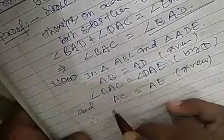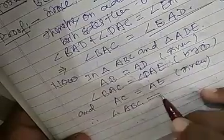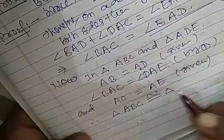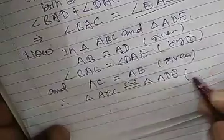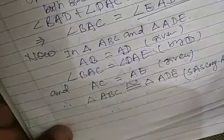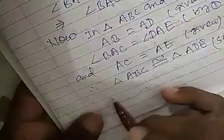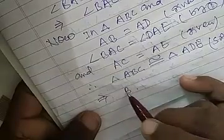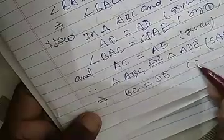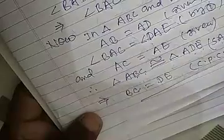Therefore, triangle ABC is congruent to triangle ADE by SAS congruence axiom. This implies that BC is equal to DE by CPCT, and this is what we had to prove. Okay.